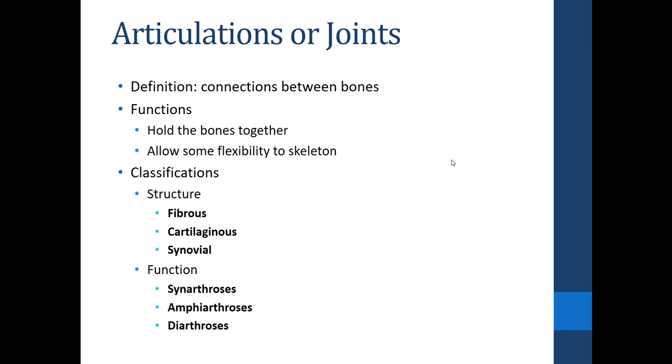We classify joints by either their structure — what they're composed of — or their functionality, meaning their range of motion. Structurally, joints fall into one of three categories: fibrous, cartilaginous, or synovial. Functionally, we have synarthrotic joints, which are immovable; amphiarthrotic joints, which are slightly movable; and diarthrotic joints, which are the most freely movable.